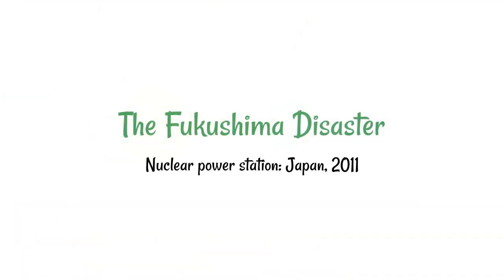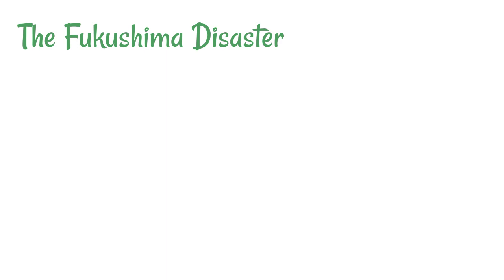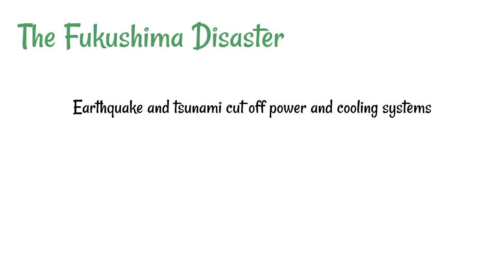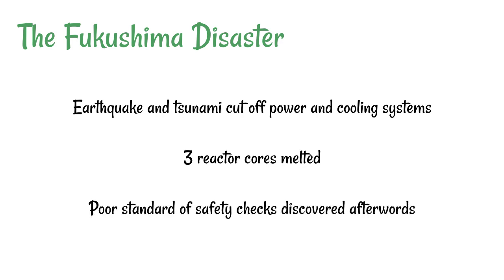Next up is nuclear disasters, and a really good example is the Fukushima disaster in Japan in 2011. At this nuclear power plant, as a result of an earthquake and an associated tsunami, the power and cooling systems were cut off. As a result of the incident, three reactor cores melted — and when a reactor core in a nuclear power plant melts, this is a very serious problem. It was also discovered that there were some poor standards in terms of safety checks.